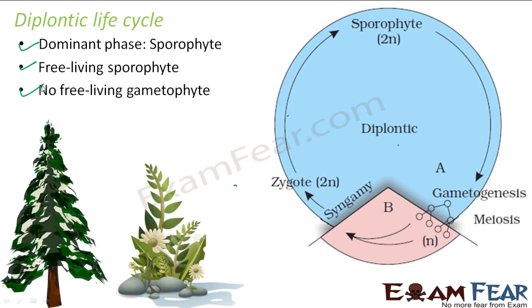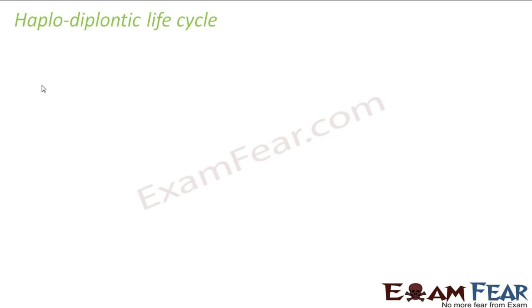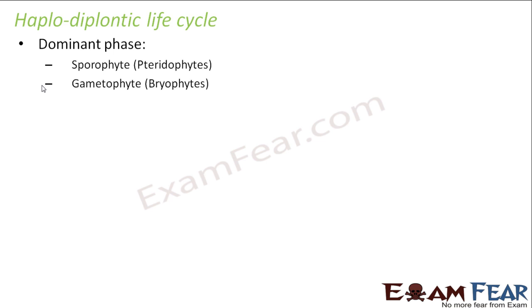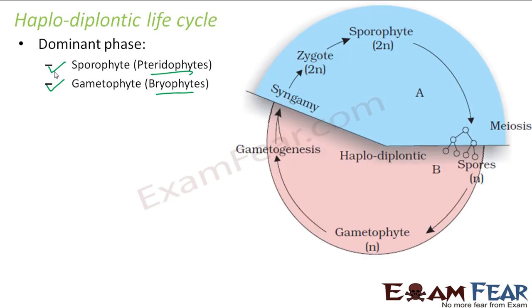The third type of life cycle is haplodiplontic, which is intermediate between haplontic and diplontic. Here, sometimes the sporophyte is the dominant phase and sometimes the gametophyte is dominant. This is seen in pteridophytes and bryophytes — in bryophytes the dominant phase is the gametophyte, whereas in pteridophytes the dominant phase is the sporophyte. In this cycle the gametophyte gives gametes, which fuse to form a zygote, which forms the sporophyte, which then gives spores.